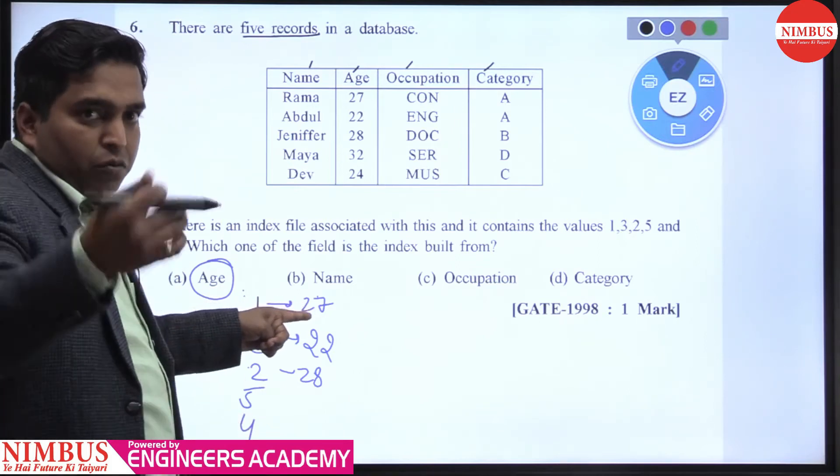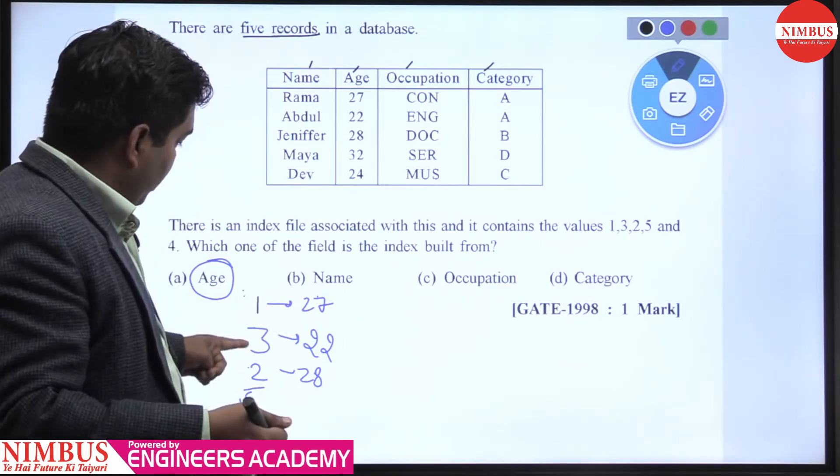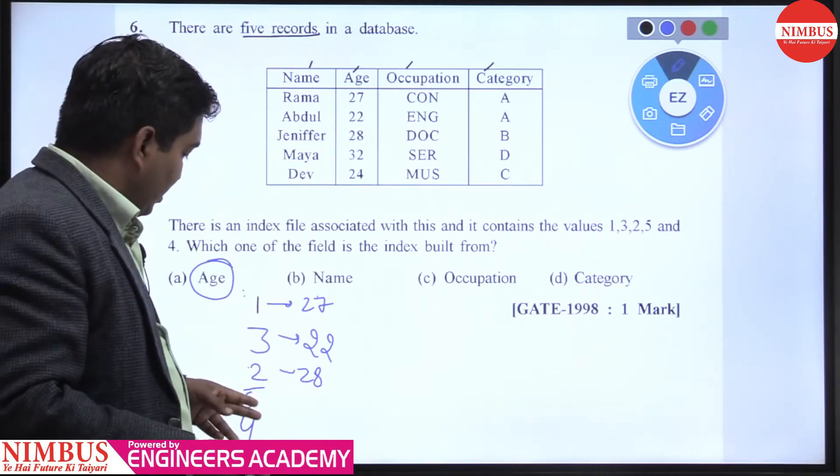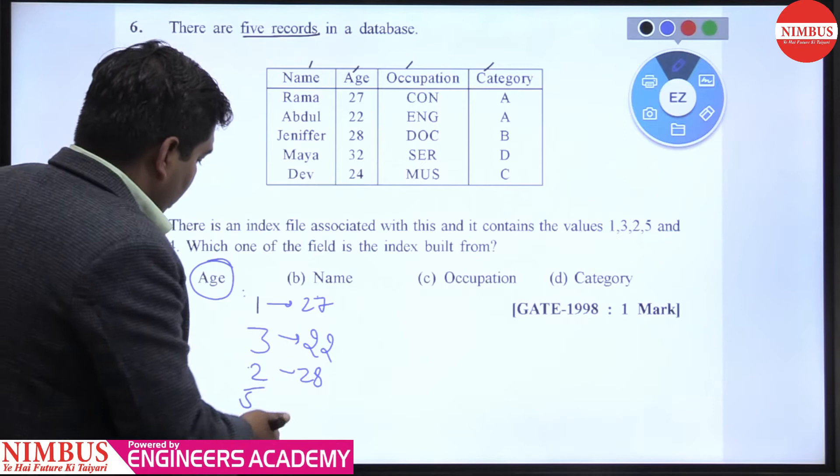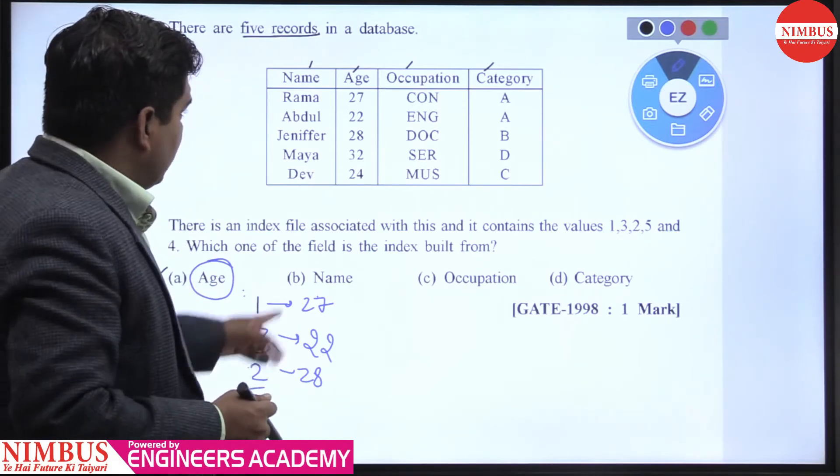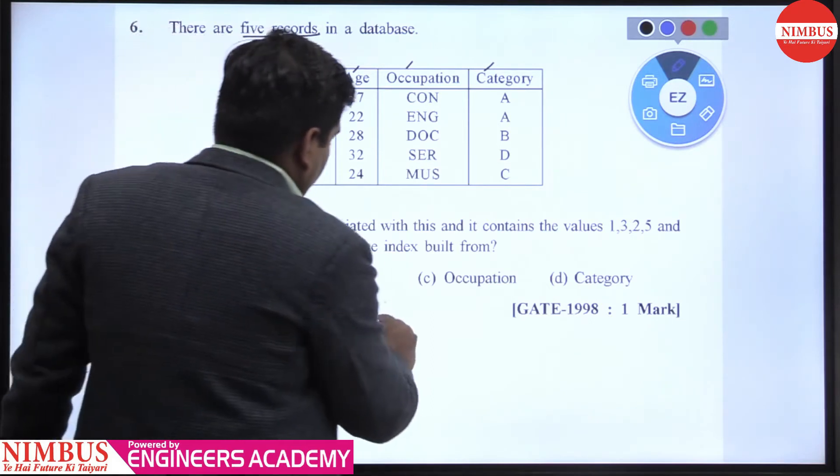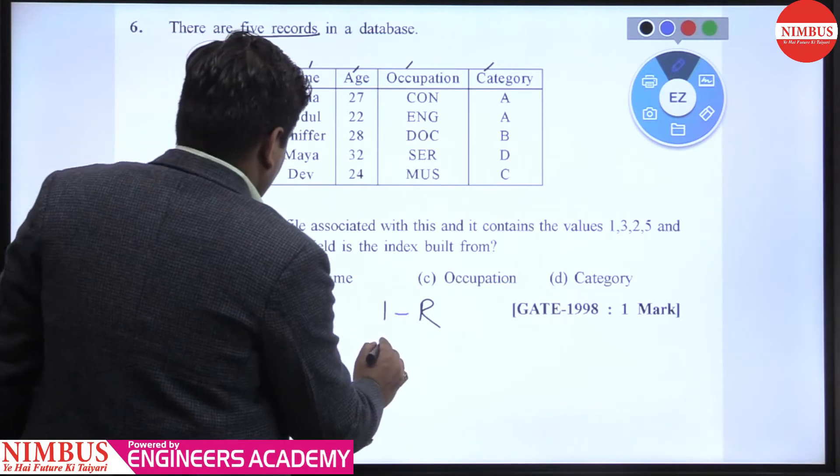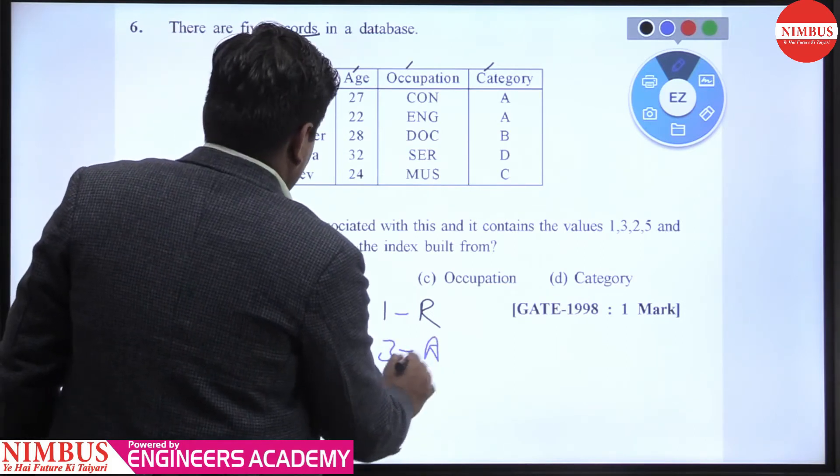According to this, two should be between 27 and 22, but five is given 34 which is wrong. So we can't make index on age. Let's take name also. One is given for R, that is Rama, and three is given for A, and two is given for J.